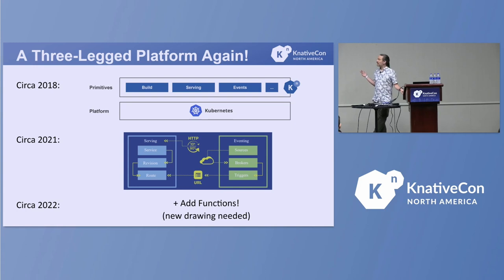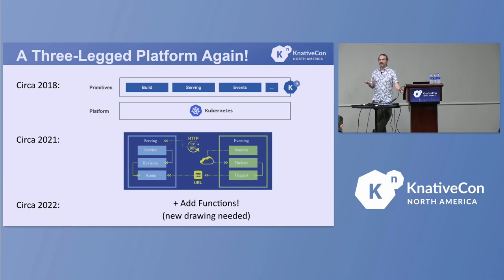Back when we came out in 2018, there were three pieces of Knative: serving, eventing, and build. These were the three things that we thought people struggled with when trying to adopt Kubernetes — how do I get myself a container, how do I run a container easily, how do I connect that container to other stuff that's going on?